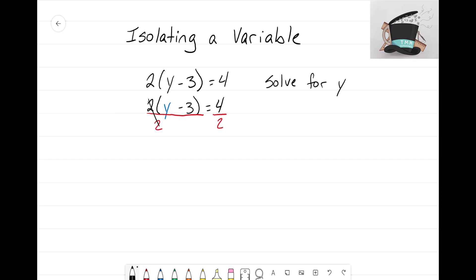And now I'm just left with that quantity y minus 3 by itself but it no longer has the parentheses around it. Now 4 divided by 2 creates 2 and now for this final step we can add 3 to both sides.